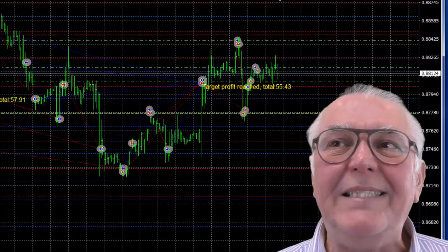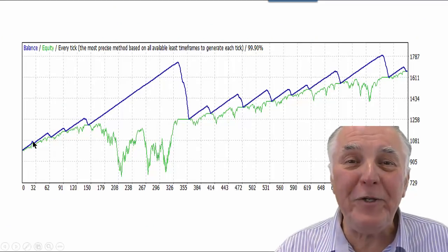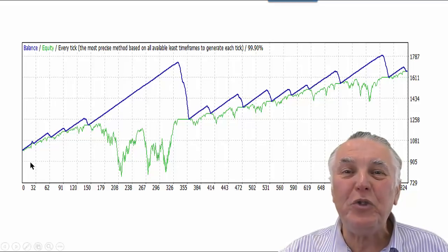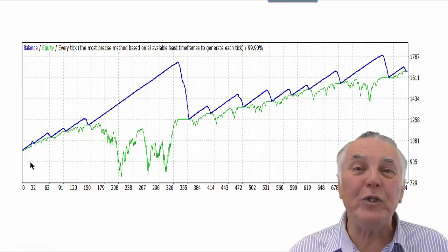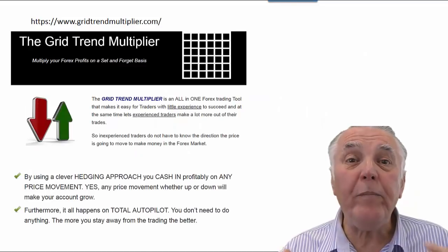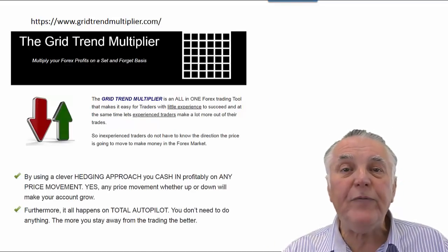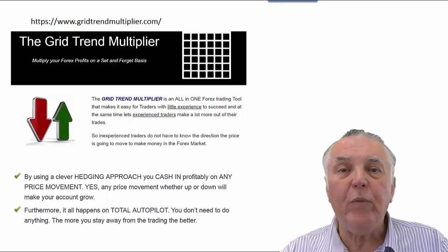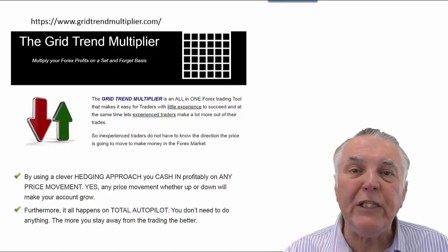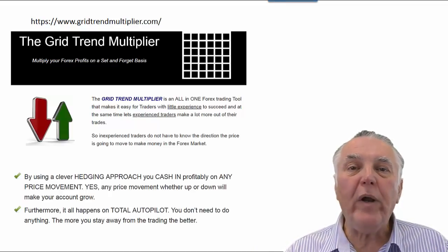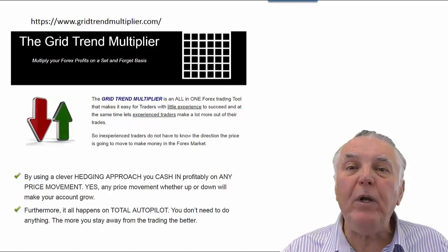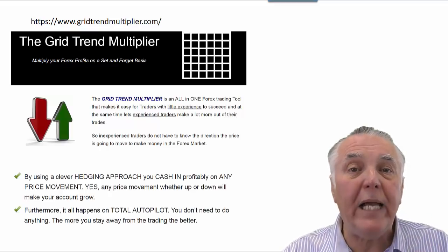I hope this gives you an idea of how the trading happens. You saw two cashing points in action and also the positive cashing in of positive deals on a continuous basis. If you want more information about the Grid Trend Multiplier, please visit the website — the link has been provided and will also be in the video description. It is an extremely powerful EA and one of our most used EAs. Although it was launched over four or five years ago, people are using it consistently on a daily basis on their live and demo accounts.